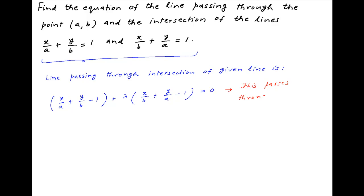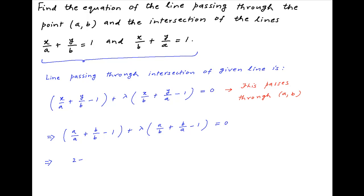We are given that this line passes through the point (a, b), and therefore x equal to a and y equal to b will satisfy the equation of this line. It therefore follows that a upon a plus b upon b minus 1 plus lambda times a upon b plus b upon a minus 1 is equal to 0. This implies that 2 minus 1 is equal to